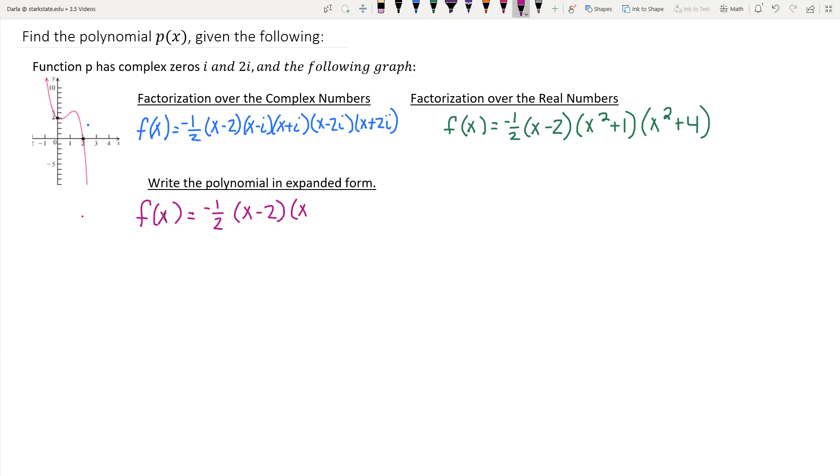If we want to write this in expanded form, basically all we need to do is multiply our factors together. So usually what I do is, and it technically doesn't matter how you do this, but I multiply my quadratic factors together first, then the linear, then the leading coefficient, because you can multiply in any order that you need to.